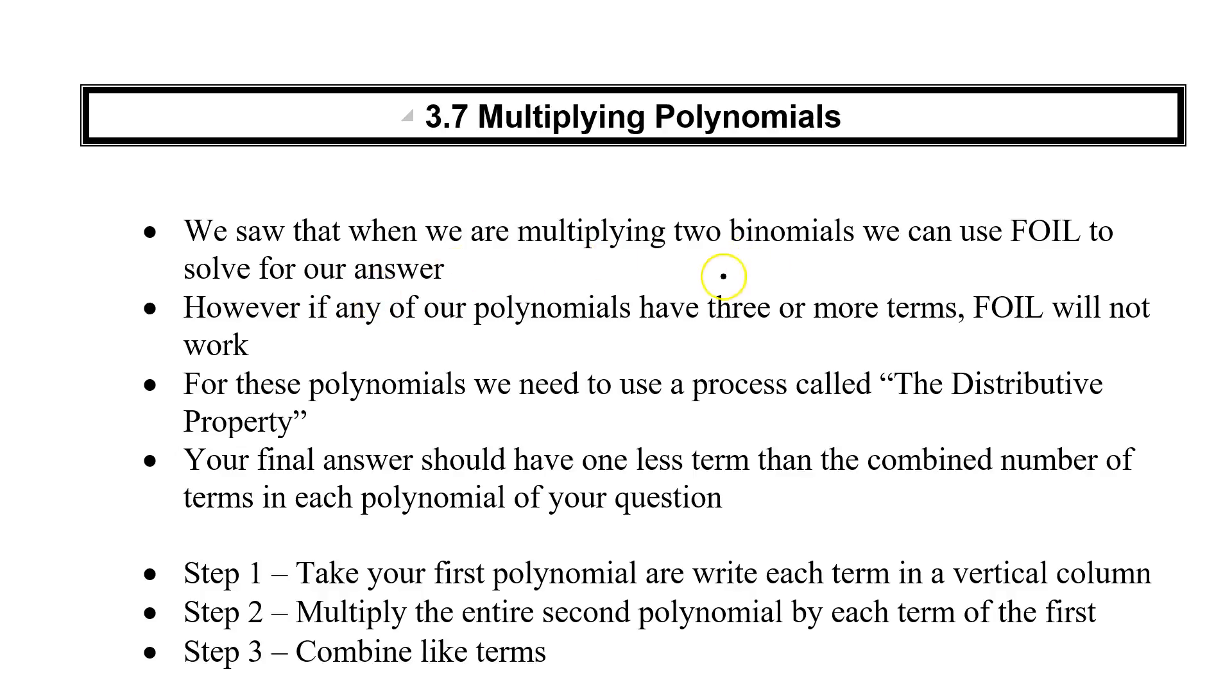So we saw that we multiply binomials together, we can use FOIL. But of course FOIL won't work for three or more terms. So we'll use something that mathematically is called the distributive property. So we're going to take one polynomial and distribute it to all the terms in the second.